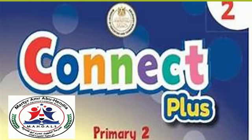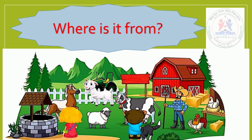Hello everybody. Today we will talk about Connect Plus for Primary 2, Second Term. We will talk about Unit 7: Where is it from? 'Where' يعني من أين يأتي؟ Where is an interrogative word asking for a place — بسأل بيها عن المكان.